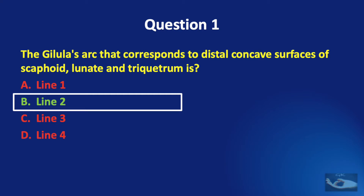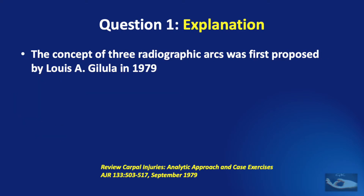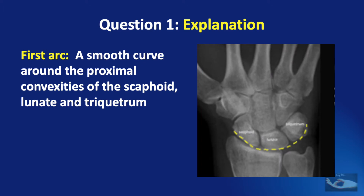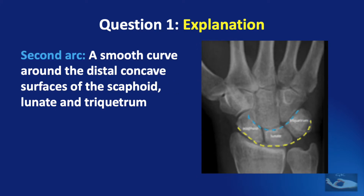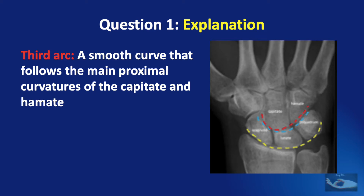The correct answer is line two. The concept of three radiographic arcs was first proposed by Louis A. Gilula in 1979. The first arc is a smooth curve around the proximal convexities of the scaphoid, lunate and triquetrum. The second Gilula's arc, represented by the blue dotted line, is a smooth curve around the distal concave surfaces of the scaphoid, lunate and triquetrum. The third Gilula's arc is a smooth curve that follows the main proximal curvatures of the capitate and the hamate.